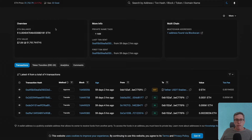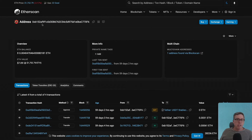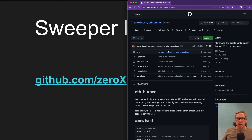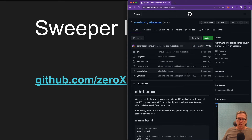Now that we understand what a sweeper bot is and how it works, let's go ahead and run one on Gorli. We're going to use a very simple ETH burner. I recommend you make sure you trust whatever source you're getting the software from, because it is very sensitive and we are going to be giving it private keys. I have the code here — it's on GitHub. The first thing we notice is that it hasn't been updated in about a year and a half, which just goes to show just how simple the software is.